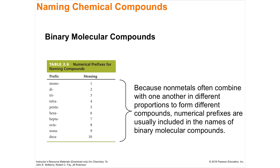So we've covered ionic compounds: positive cations with negative anions. When naming molecular compounds — molecules formed by shared electrons between non-metals — you use a different system. Non-metals are in the upper right-hand corner of the periodic table: carbon, oxygen, nitrogen, chlorine, and so on. Molecules of non-metals combine differently and need to be named differently.